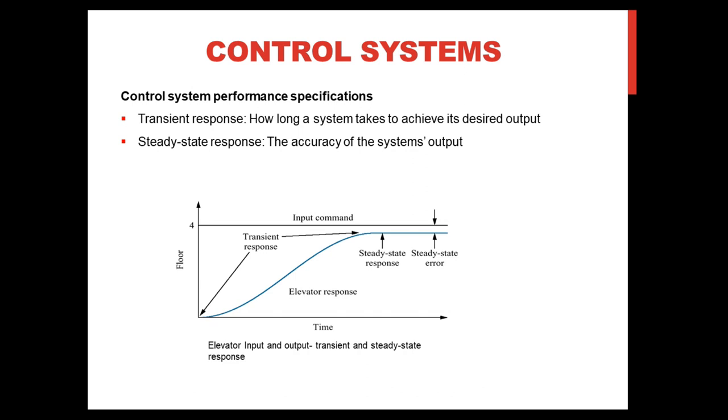The desired performance of a control system is determined by the transient response and steady-state response. These are the two major measures of performance in a control system. The transient response refers to how long a system takes to achieve its desired output, while the steady-state response refers to the accuracy of the system's output.